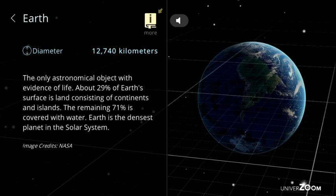Earth, diameter: 12,740 kilometers. The only astronomical object with evidence of life. About 29% of Earth's surface is land consisting of continents and islands. The remaining 71% is covered with water. Earth is the densest planet in the solar system.